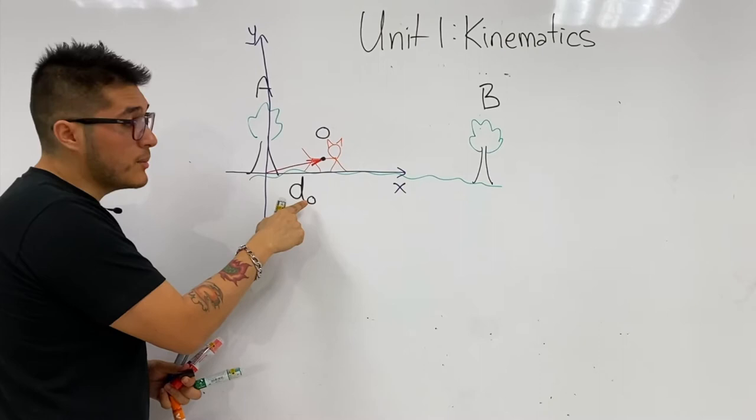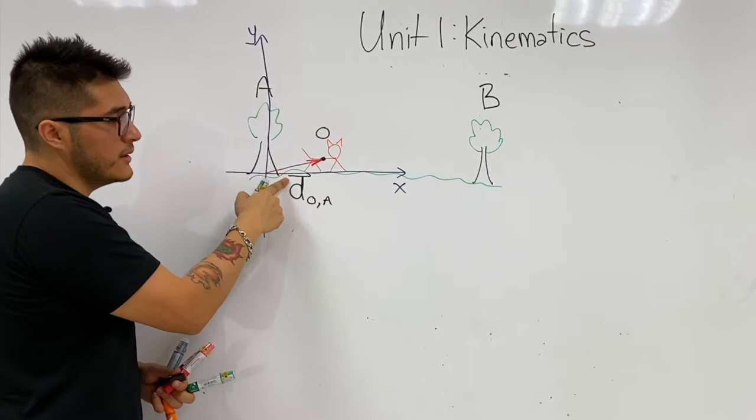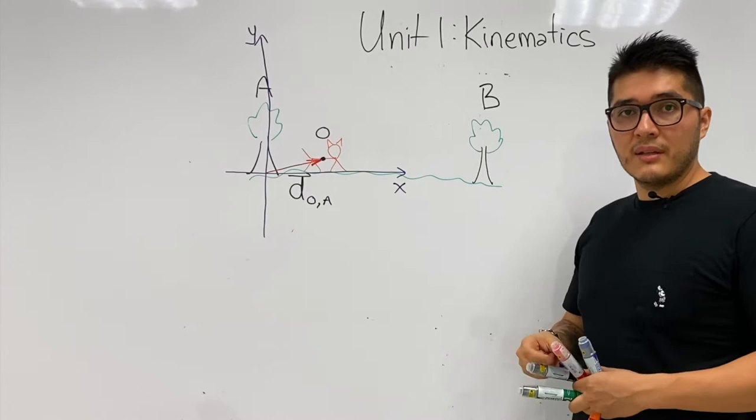Let's call this one d̂ initial, initial is the number zero, and it belongs to A. It's a vector quantity so put the hat in there. We can argue that we could place another coordinate system if we want to along tree B.